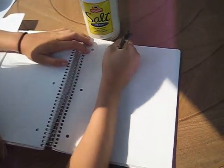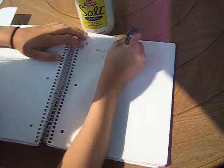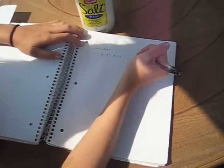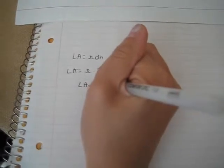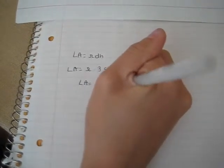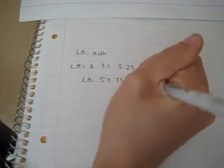Since we already know the diameter of the salt, you plug in pi times 3.5 times 5.25 to find the lateral area. After calculating, the lateral area of the salt cylinder is 57.73 inches squared.